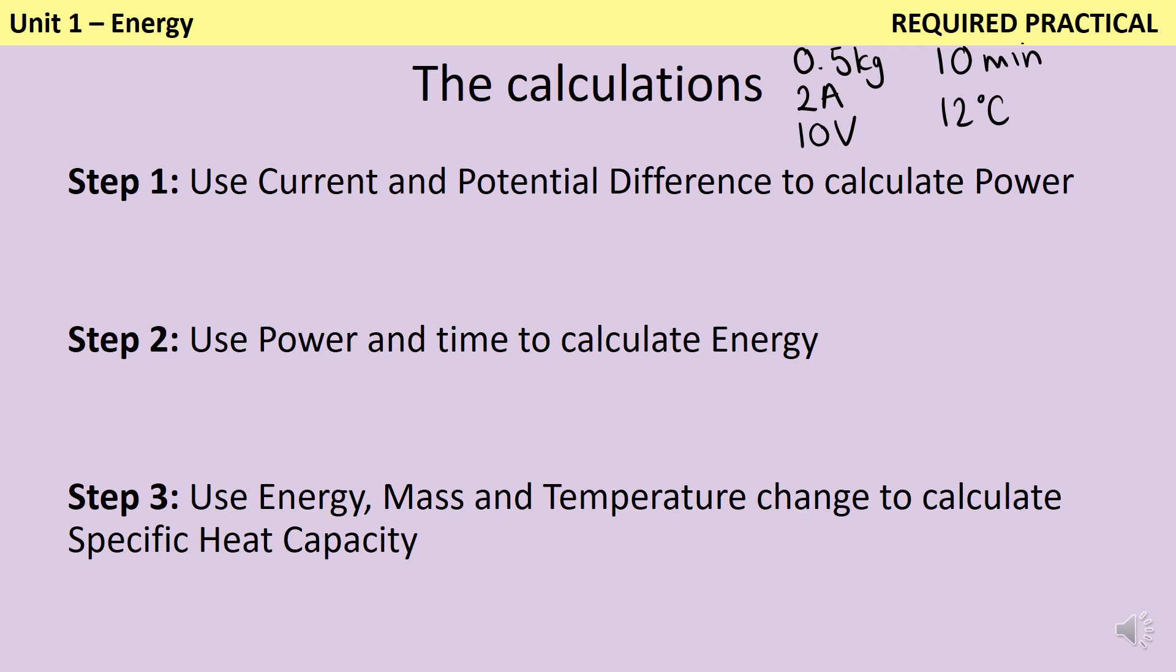Let's look at how we would carry out each step. First, I need to calculate the power for this setup. I know that power is found by multiplying current by potential difference. My current is the number with an A after it, the number in amps. And my potential difference has a V after it for volts. That gives me an answer of 20 watts. In other words, every second that goes by, 20 joules of energy are being transferred.